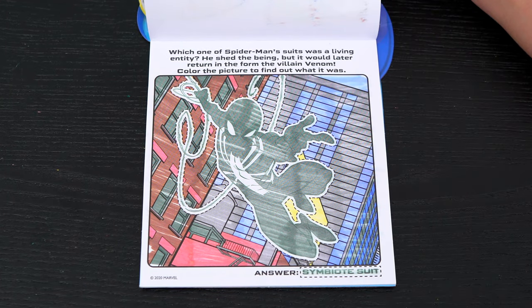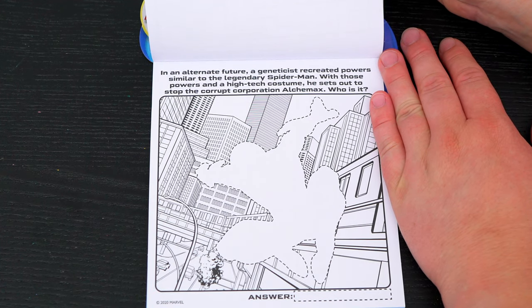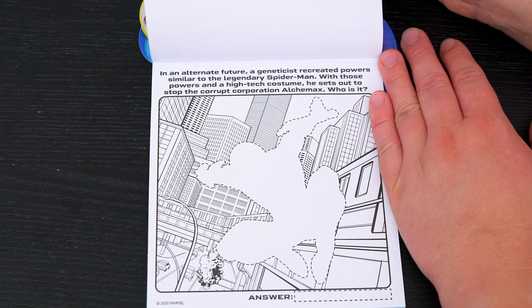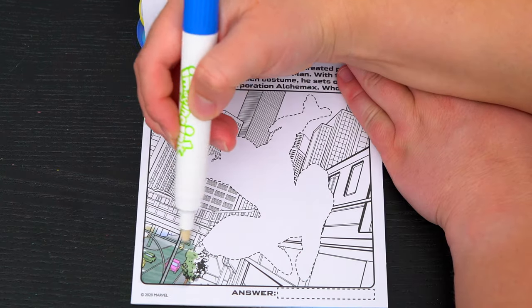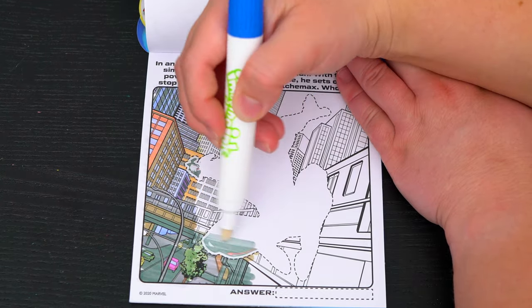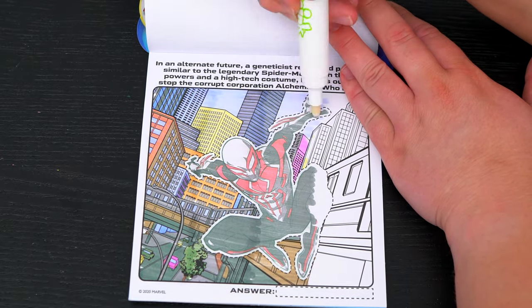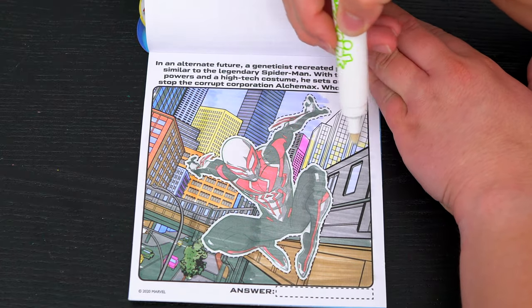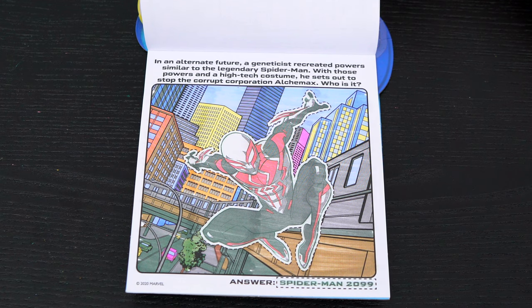It's his symbiote suit! In an alternate future, a geneticist recreated powers similar to the legendary Spider-Man. With those powers and a high-tech costume, he sets out to stop the corrupt corporation Alchemax. Who is it? It's Spider-Man 2099! So awesome!